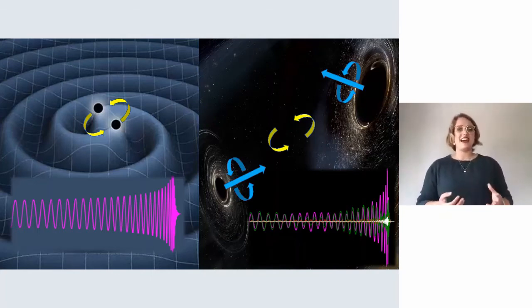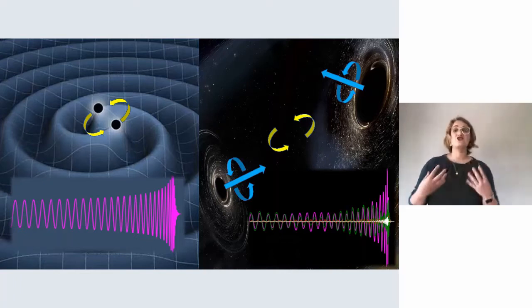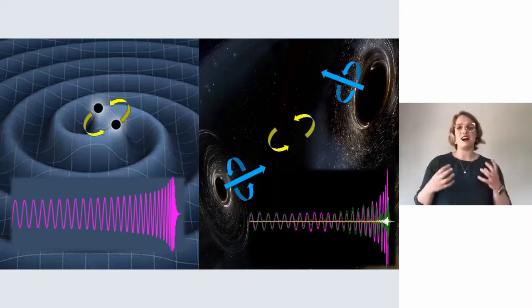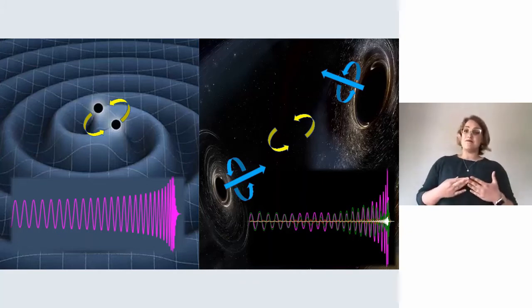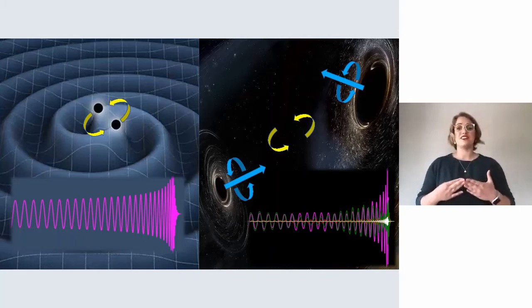Where better to test Einstein's theory than the strongest gravitational pull in the universe, inside a black hole? But there's a problem: we can't see into them because their gravity is so strong no light can escape.